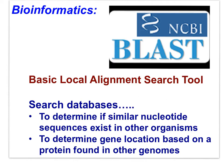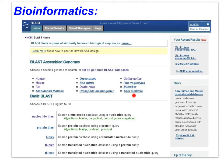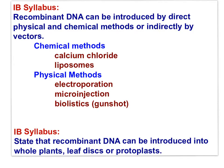The National Center for Biotechnology Information maintains a database called BLAST — Basic Local Alignment Search Tool. You can search the database to determine if similar nucleotide sequences exist in other organisms, or gene location could be determined based on a protein found in the genomes of other species. You can use BLAST to search among different species using nucleotide sequences or amino acid sequences, and more.